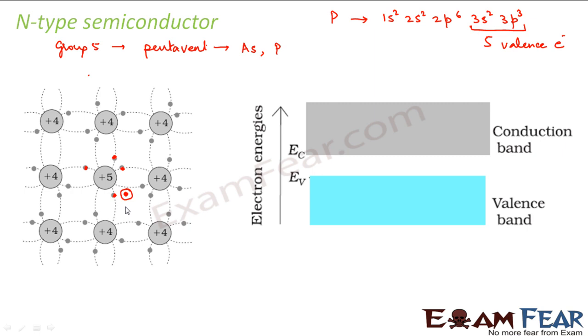Now this impurity, that is this pentavalent impurity is known as donor impurity. Why donor impurity? Because it has got extra electron and it is donating that electron for conduction purpose. So this impurity is known as a donor impurity. Now, if you look at the semiconductor, you see that you don't even need to raise the temperature. Even at room temperature, you have conduction electrons, you have the semiconductor conducting electricity. So we saw the advantage of adding impurity.